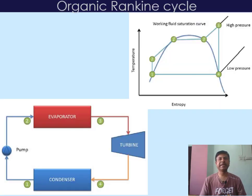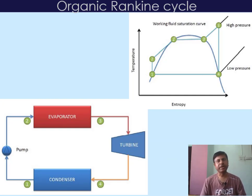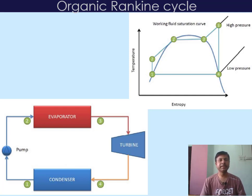As with the Rankine cycle, this system is composed of an evaporator, a condenser, a pump, and a turbine. The process is marked by states 1, 2, 3, and 4.